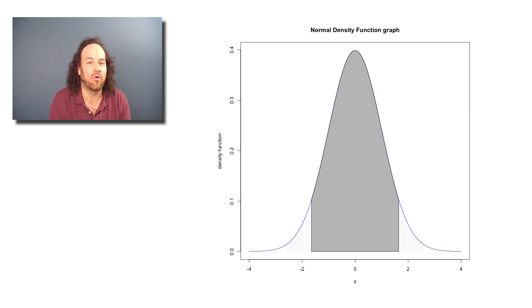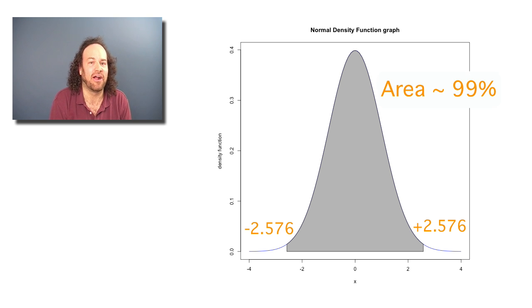Or if you want to be more careful and you go from minus 2.576 up to 2.576, then you'll get about 99% of all the area underneath the curve. And that's the way to get 99% confidence intervals.